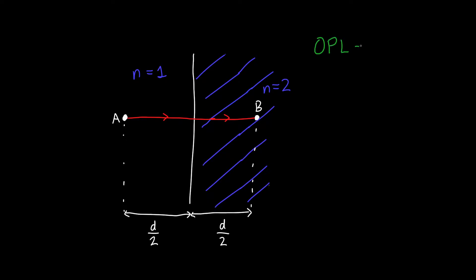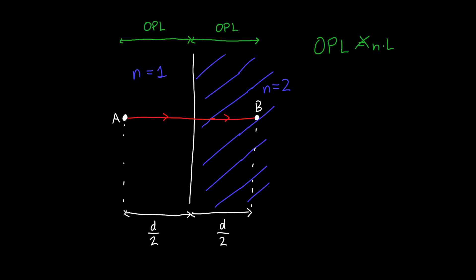What is the optical path length in this example? We can't just use n times l because the refractive index isn't constant everywhere, but it is constant on the left and constant on the right. So we figure out the optical path length for the first segment and add it to the optical path length of the second segment. We can do this because fundamentally we're doing an integral — summing over all segments. OPL1 is the refractive index (1) multiplied by the distance (D/2), so OPL1 equals D/2.